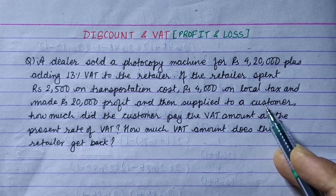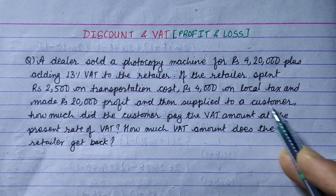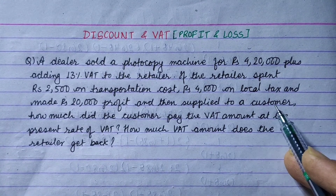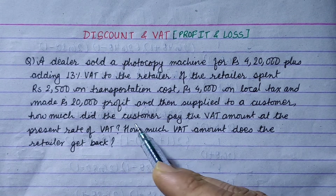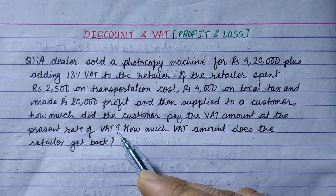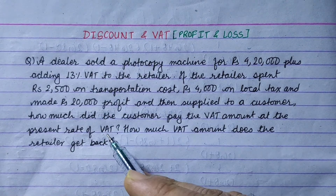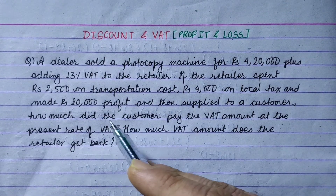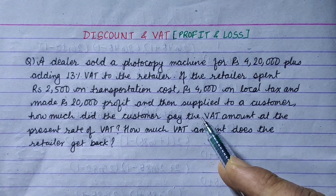The retailer then supplied to a customer. How much did the customer pay as the VAT amount at the present rate? The VAT rate is 13 percent. Also, how much VAT amount did the retailer get back?